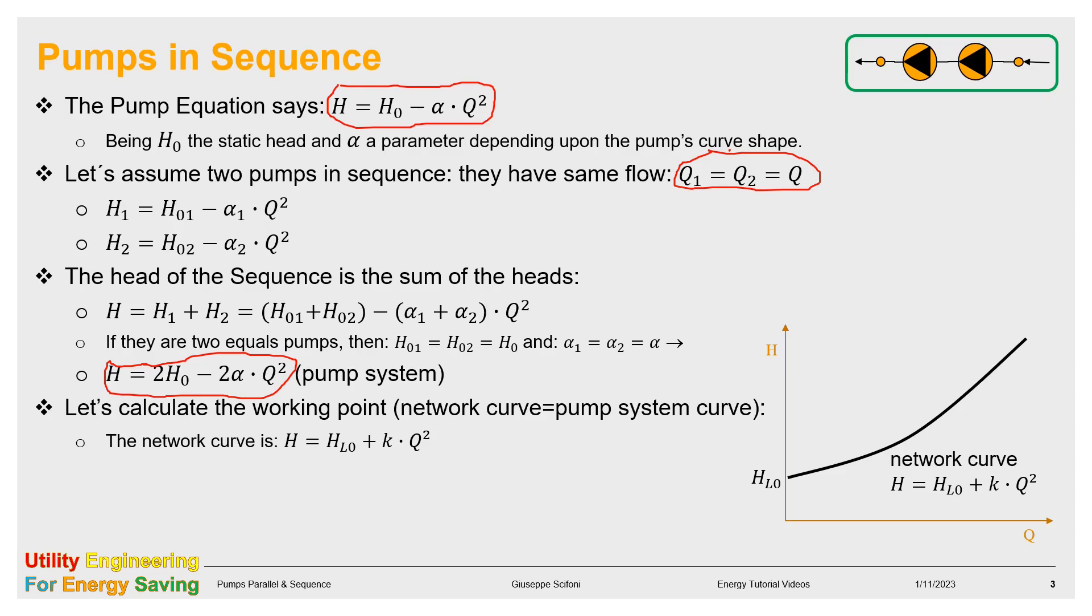The network curve is still a quadratic function with the shape of an ascending parabola instead. That curve depends upon two parameters: the head at zero flow HL₀, and the curve shape K, that describes how deep the curve is. The above parameters are also given. The intersection point among the two curves is found by equalizing the two equations. We get Q as the flow for the sequence and H as the head of the sequence, as displayed in green.